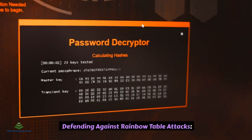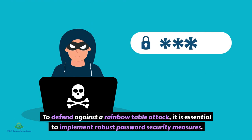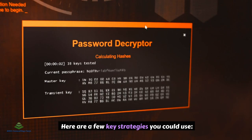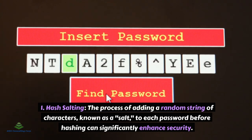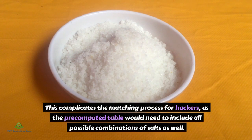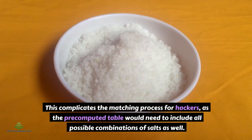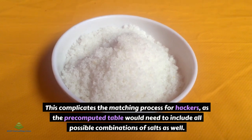To defend against a rainbow table attack, it is essential to implement robust password security measures. The first strategy is hash salting — the process of adding a random string of characters, known as a salt, to each password before hashing. This can significantly enhance security, as it complicates the matching process for hackers, since the pre-computed table would need to include all possible combinations of salts as well.